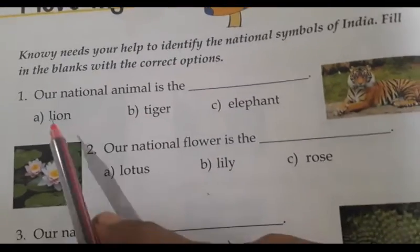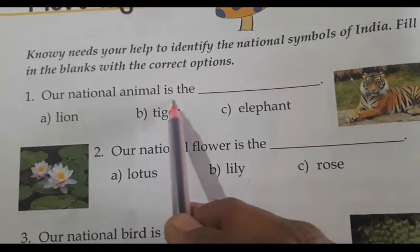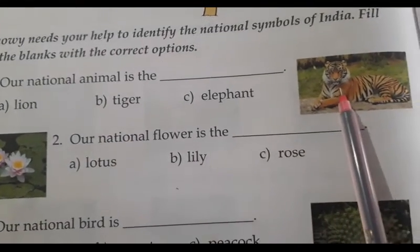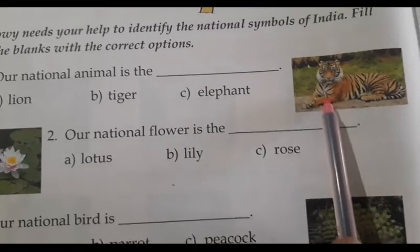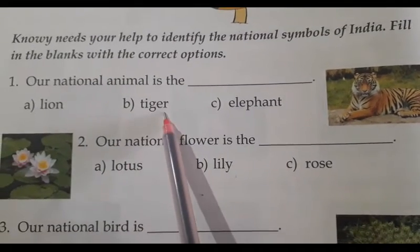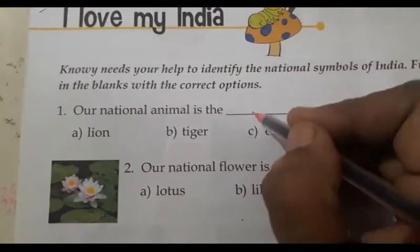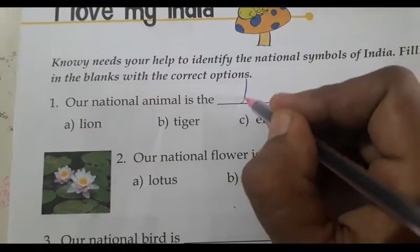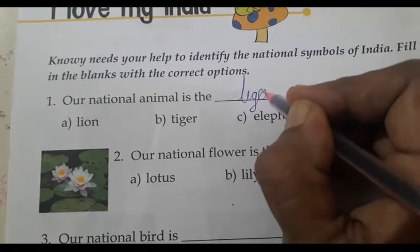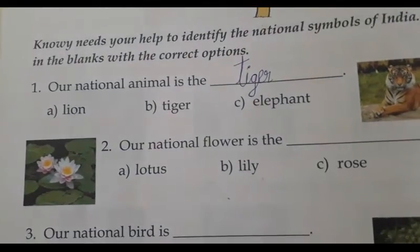First question: our national animal is the — which is our national animal? You can see the picture also. Which animal is this? Tiger! Yes, the tiger is option B. Write down tiger: T-I-G-E-R, Tiger.